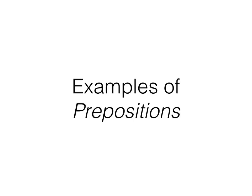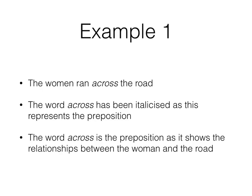Examples of prepositions. Example 1: The woman ran across the road. The word across has been italicized and underlined as this represents the preposition and is before its object, the road.